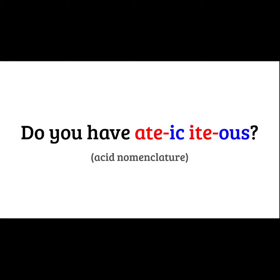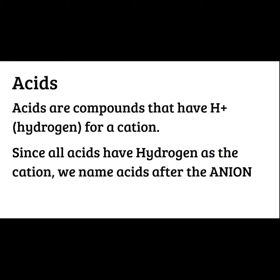Hey guys, this is your last set of notes for Unit 5. We're going to talk about how to name acids. An acid is a compound that has a hydrogen ion at the beginning of the formula, so it'll have an H at the beginning. Since all acids have a hydrogen as a cation, we name acids after the anion, or the negative.